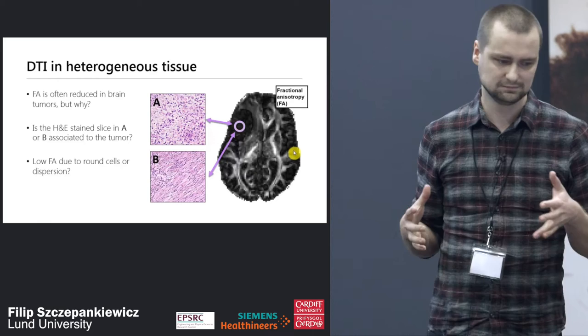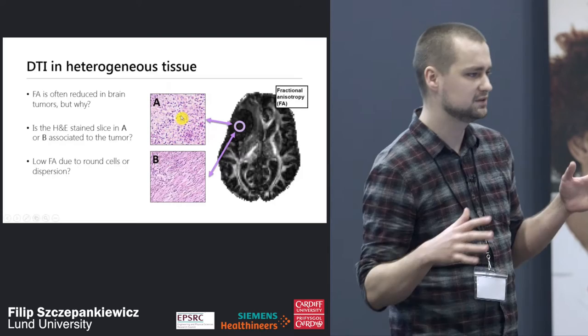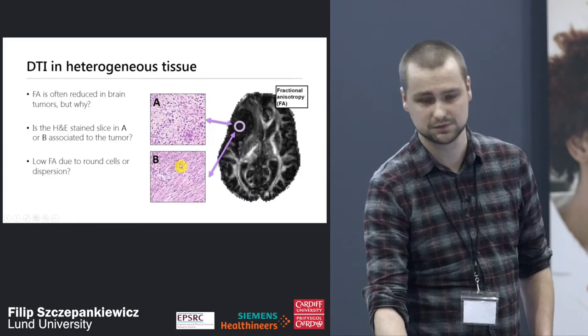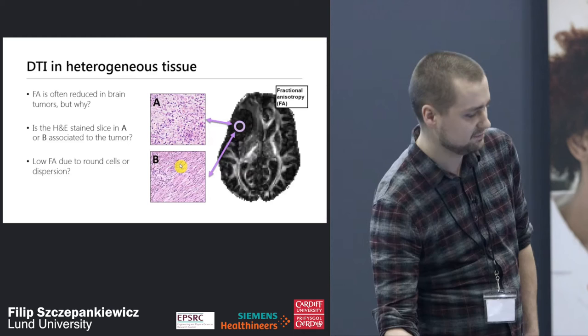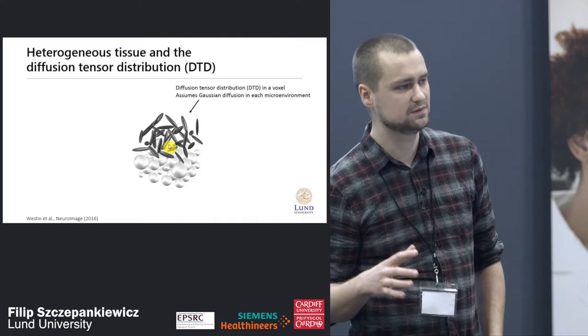The problem becomes more evident when we're looking at tissue where we don't know what is there. FA is usually reduced in tumors, but we can't say whether it's situation A — where we have mostly spherical cells making the tumor isotropic — or whether we have elongated cells which are just very disordered. Both are equally plausible but we can't really say why the FA is low.